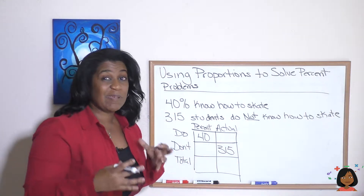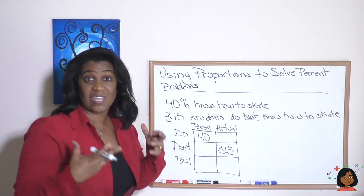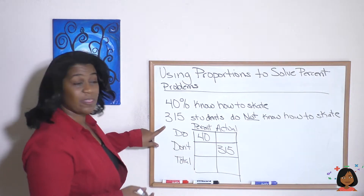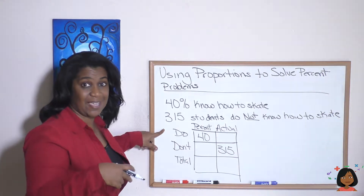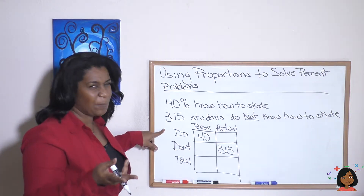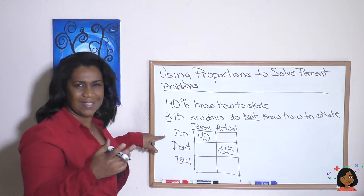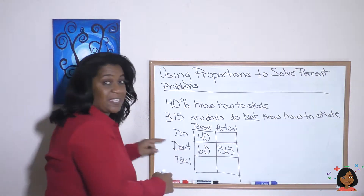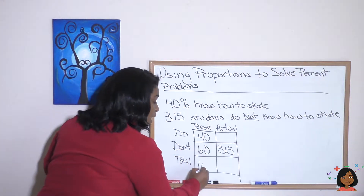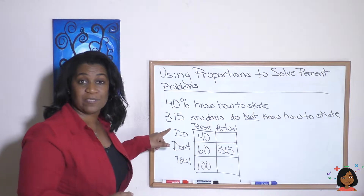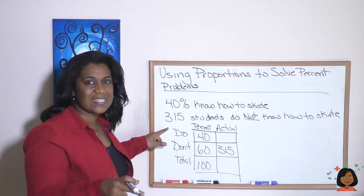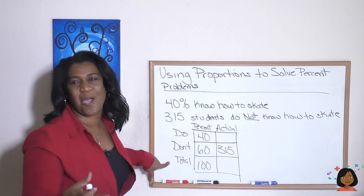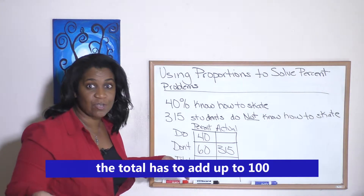There's a bit more information we can fill in on our ratio chart. If we know that 40% know how to skate, what percent doesn't know how to skate? 60%, because 40 plus 60 has to equal 100. If they give you a percent, you can easily fill in the other category and your total because you know it has to add up to 100.